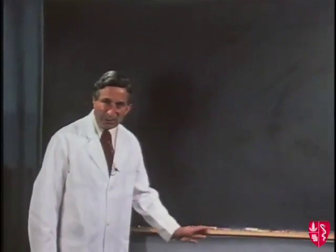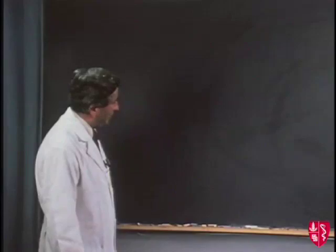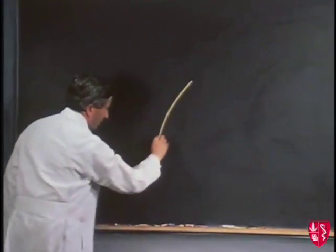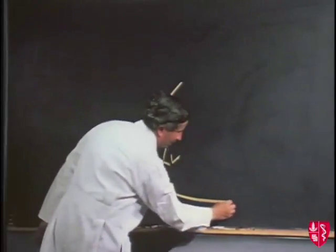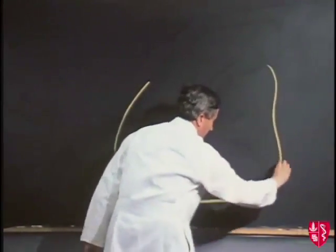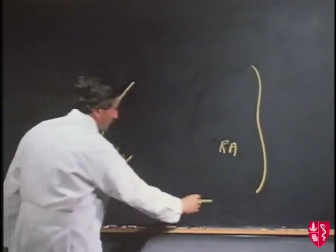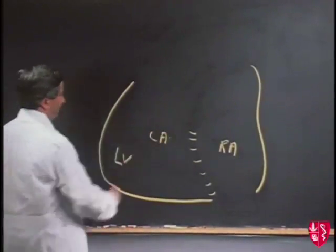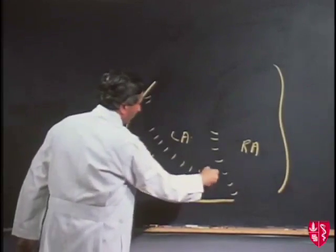If we turn the heart round and look at its posterior aspect, we can see the arrangement of the different parts of it relative to one another. This will be the region of the apex of the heart — in other words, this is the back of the left ventricle coming round onto the diaphragmatic surface of the heart. Over here, we can indicate the position of the right atrium, and we can indicate the position of the groove coming up here between the right atrium and the left atrium.